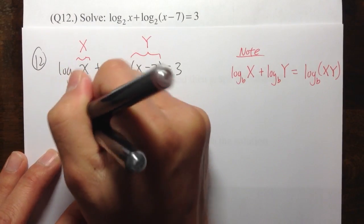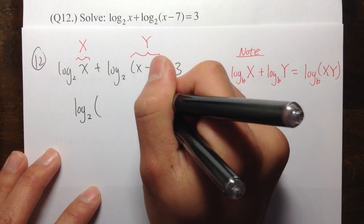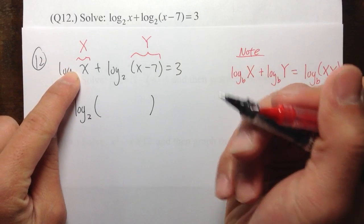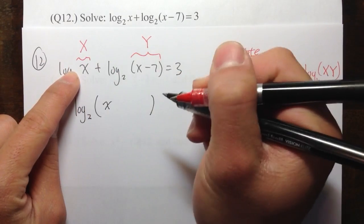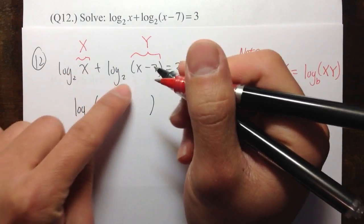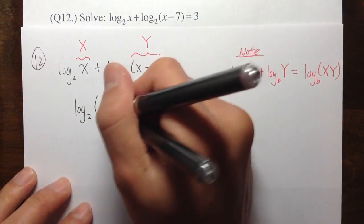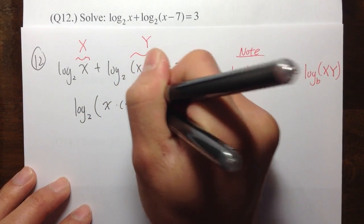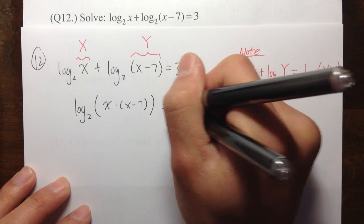we get log base 2, and let me put a big parenthesis first. The first thing that we need is the X. And multiply by X minus 7, so times X minus 7, and that's equal to 3.